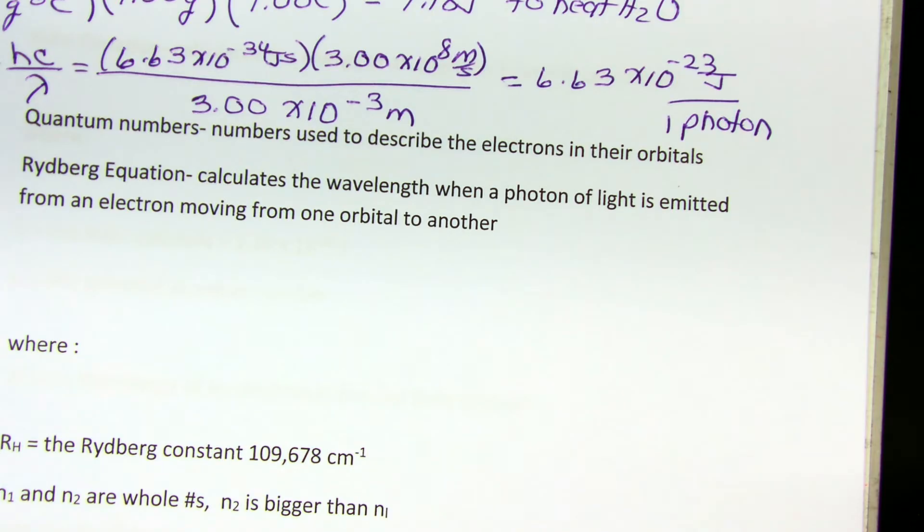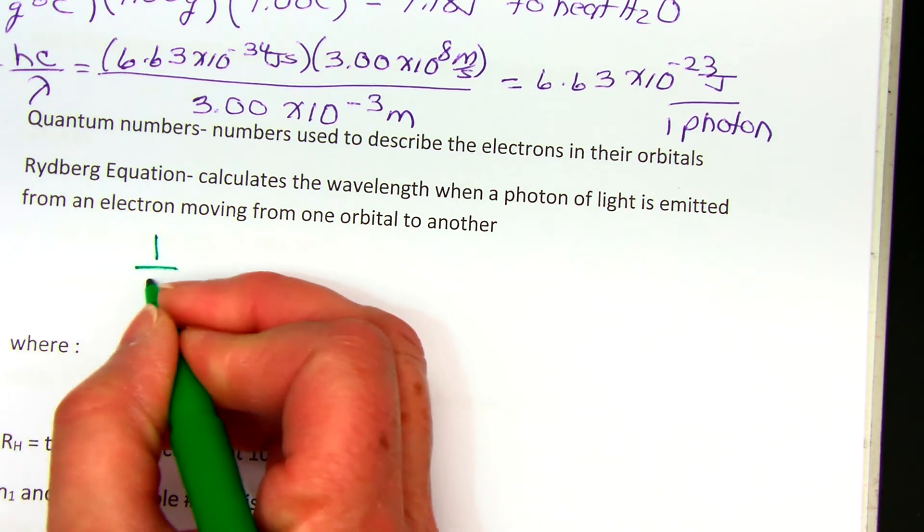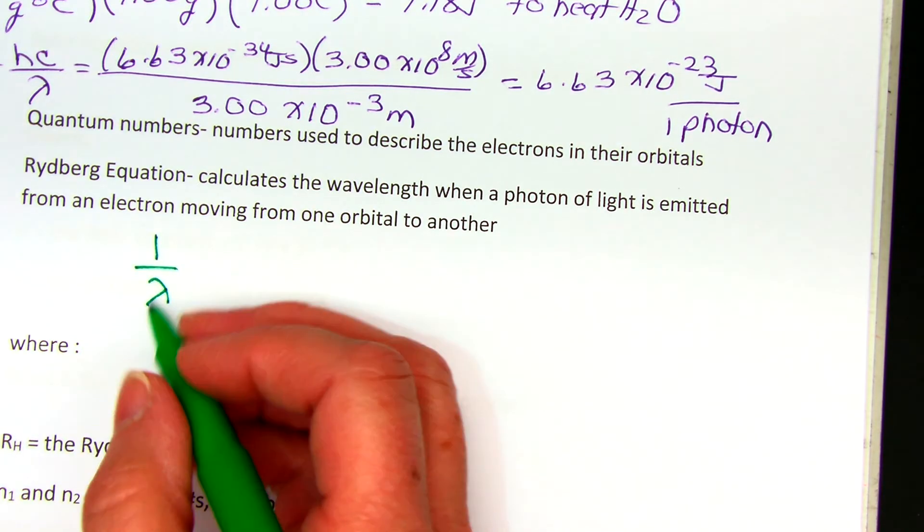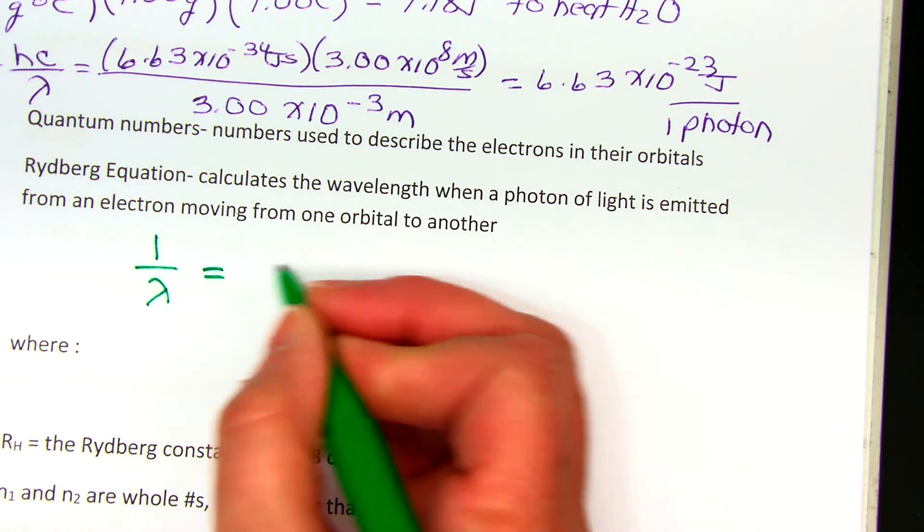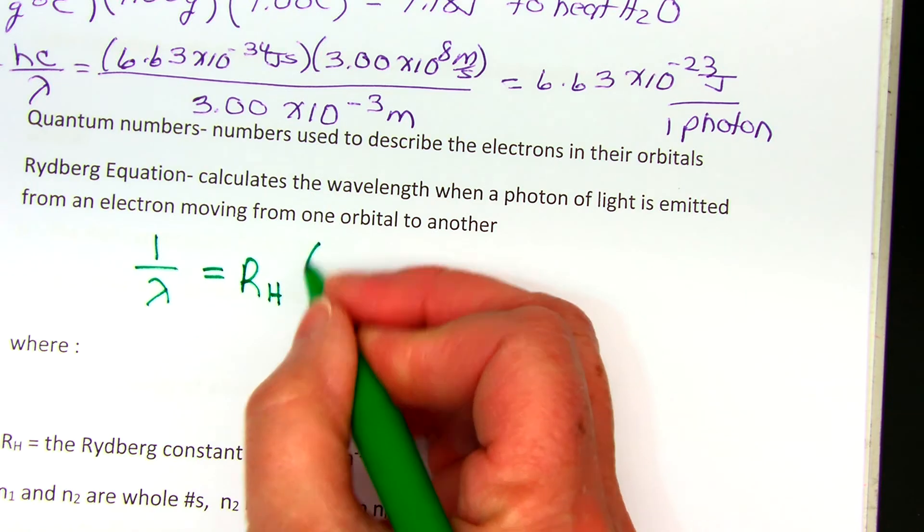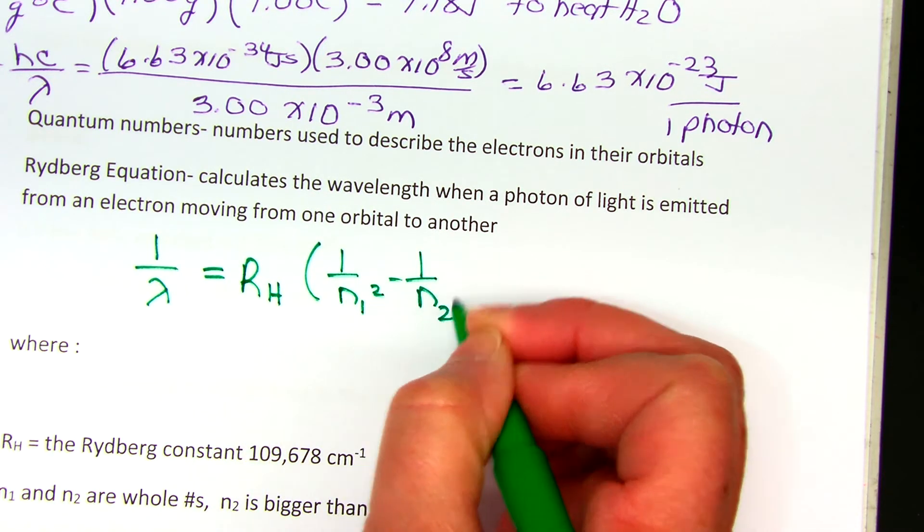The first time we introduce this is in the Rydberg equation. This relationship allows us to calculate the wavelength when we have an electron moving from one principal energy level to another, or one orbital to another. This relationship is a little awkward because it actually calculates the reciprocal and then you need to invert it. So 1 over lambda, the reciprocal of the wavelength, is equal to R sub H, a constant, times 1 over n1 squared minus 1 over n2 squared.